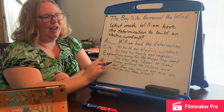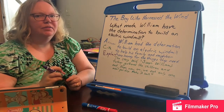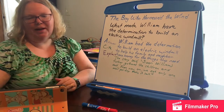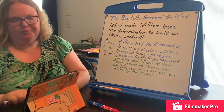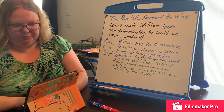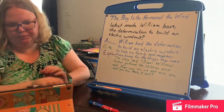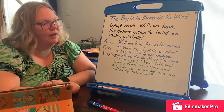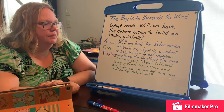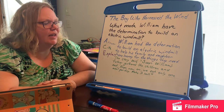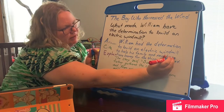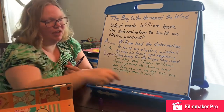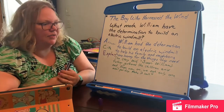Now I'm going to switch to purple to explain my answer — why did I pick that? On the page where he's sitting sadly by the tree, it says, 'For weeks he sulked under the mango tree until he remembered the library down the road, a gift from the Americans.' William had the determination to build an electric windmill to help his family and neighbors have money for things they need, like food. Just like here, you have to pay for electricity — he could sell that electricity to other towns.